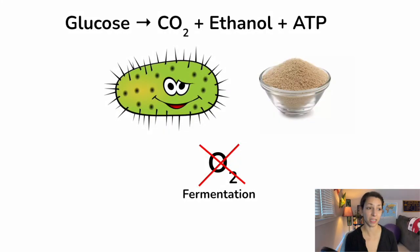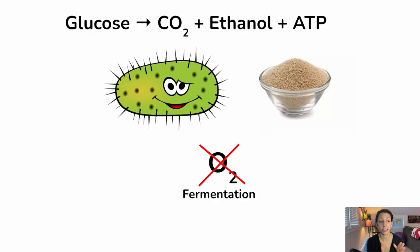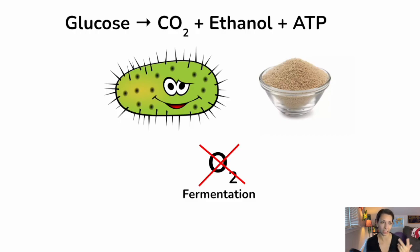There's another type of fermentation: alcoholic fermentation, which can happen in yeast and in some bacteria. This process can also be completed without the presence of oxygen, and it produces carbon dioxide, ethanol — which is a form of alcohol — and ATP. Still just two ATP, but it has those other byproducts: carbon dioxide and ethanol.